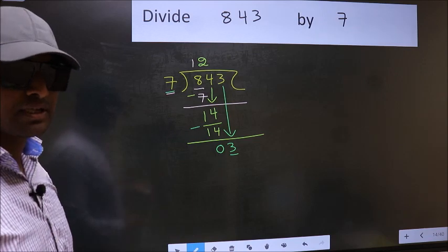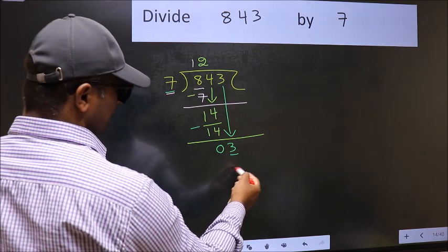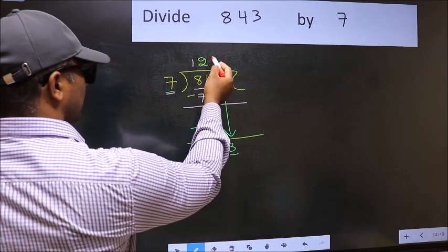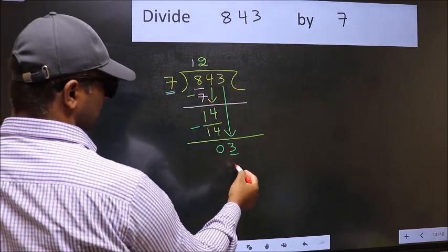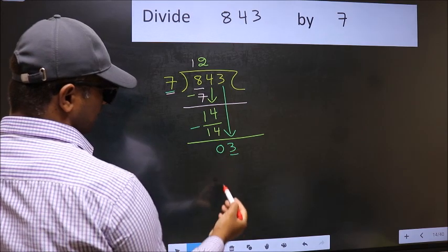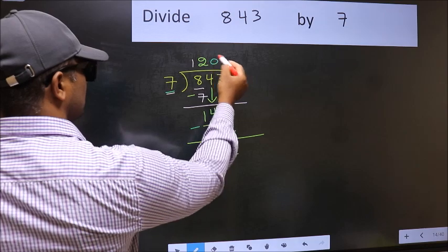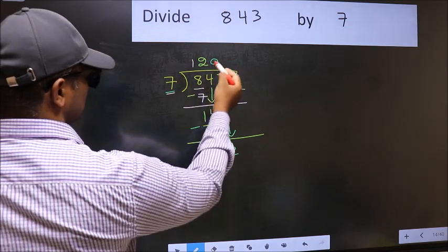Instead, what you should think of doing is, which number should we take here? If I take 1, we will get 7. But 7 is larger than 3. So what we should do is, we should take 0. So 7 into 0, 0.